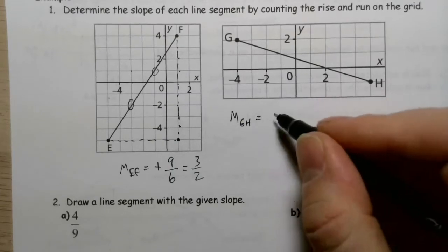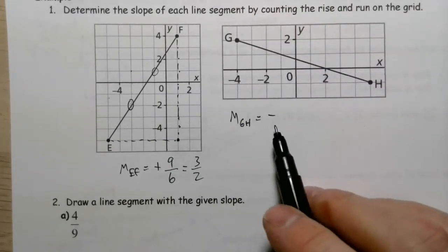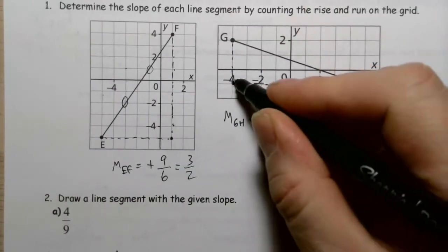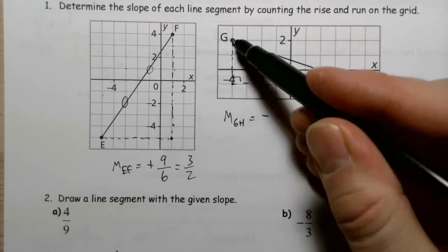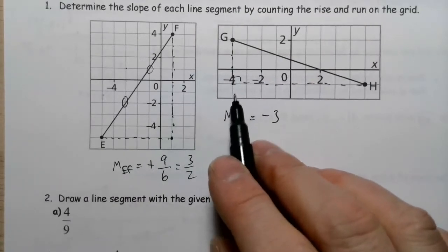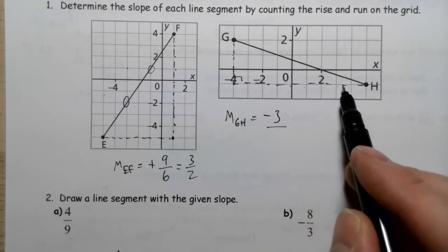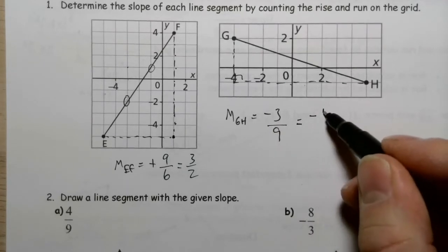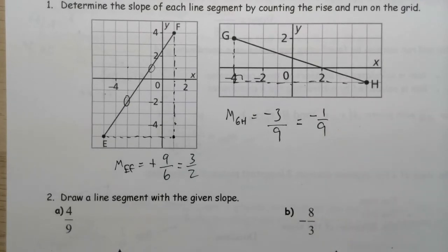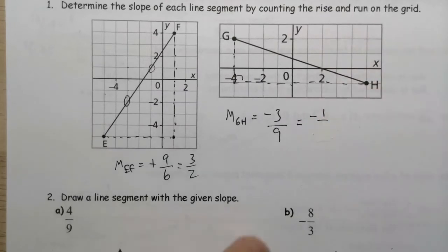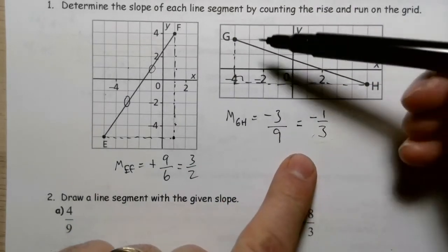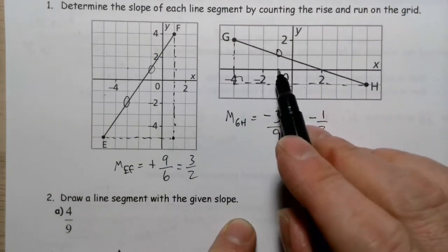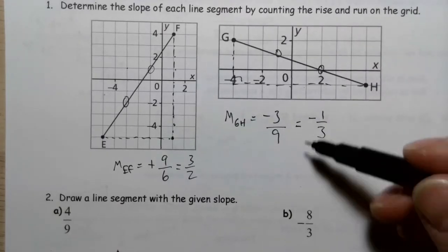Slope of GH, I can tell right now it's negative because it's dropping down. Let's draw that triangle in. Starting at the corner, I'm going to go up 1, 2, 3. So there's a rise of 3, which is more of a drop. Then my run is 1, 2, 3, 4, 5, 6, 7, 8, 9. So negative 3 ninths, which simplifies to negative 1 over 3.